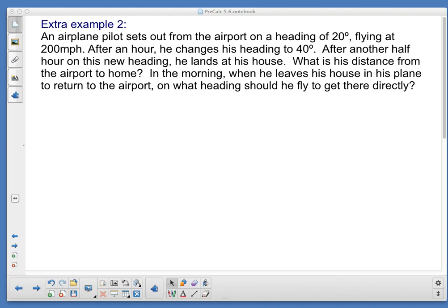Today we're looking at an airplane pilot. An airplane pilot sets out from the airport on a heading of 20 degrees, flying at 200 miles per hour. After an hour, he or she changes heading to 40 degrees. After another half hour on this new heading, they land at their house. This is kind of a three-part question. First, I've got to draw a diagram and find how far they flew on each heading. The second part is the total distance from the airport. The third part is the direction from their home back to the airport.